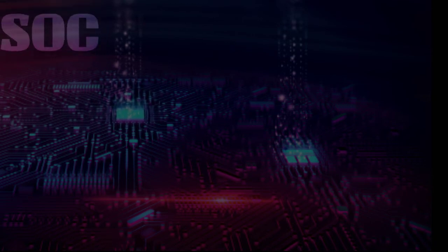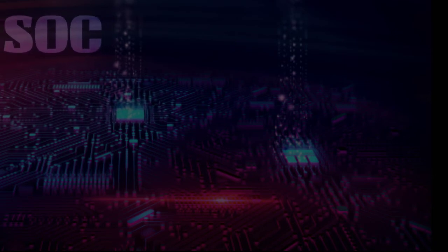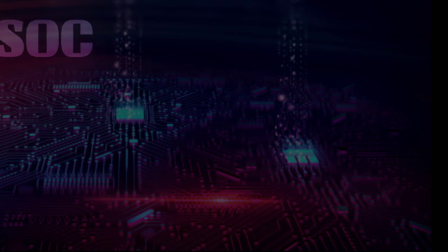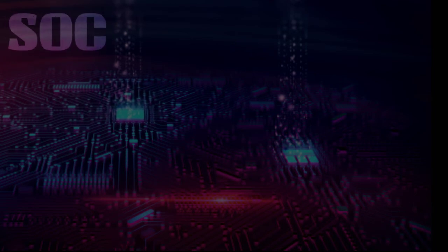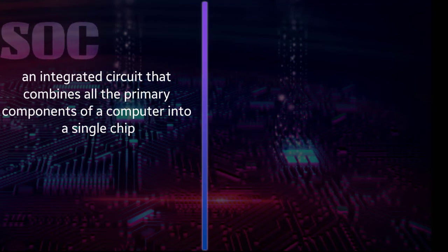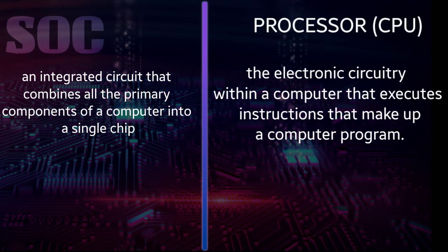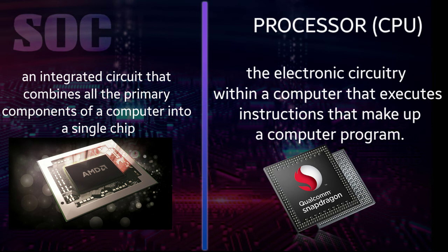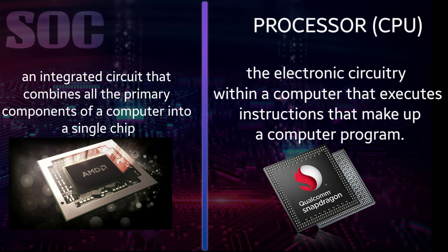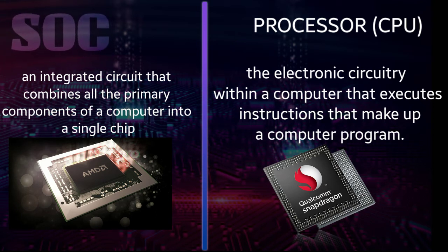So far we know what SoC in our devices means and their types. It's time to differentiate SoC from a processor, because they are quite confusing when it comes to their models. SoC is an integrated circuit that combines all the primary components of a computer into a single chip, while a processor is the electronic circuitry within a computer that executes instructions that make up a computer program. The CPU performs basic arithmetic, logic, controlling, and input/output operations specified by the instructions in the program.